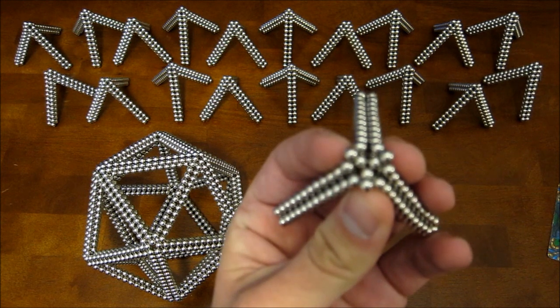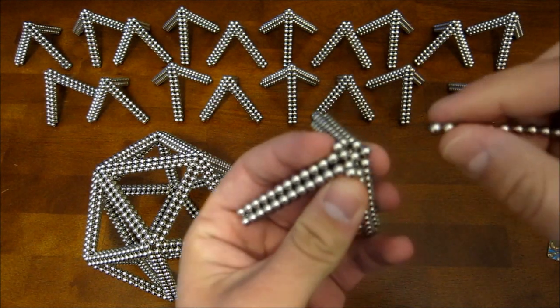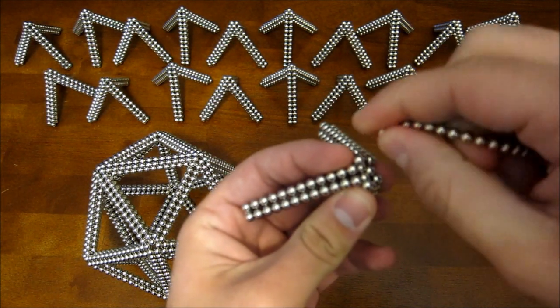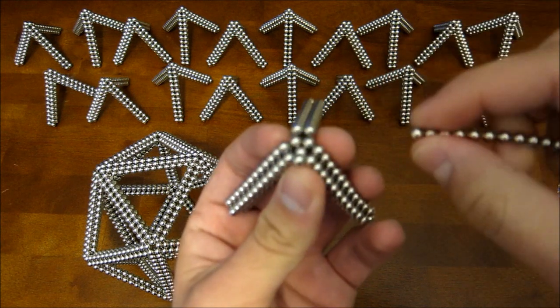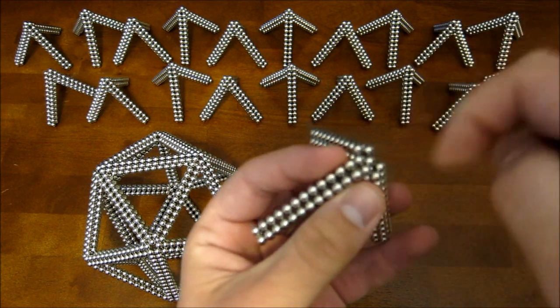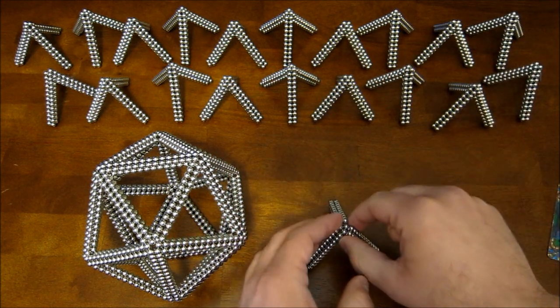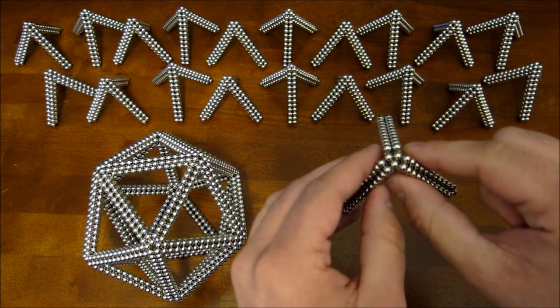And so what you now want to do is take your chain again and remove those three magnets that just split away. So you end up with a top that looks like this.